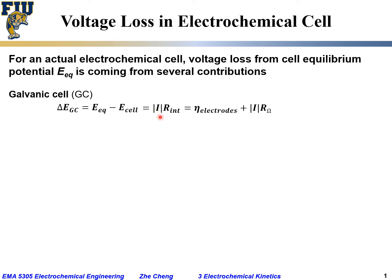If we break down the loss further, it comes from two terms in general. One is the absolute value of the current times R_ohm — the ohmic resistance, primarily from the electrolyte. This is the ohmic term. Then there are overpotential terms, eta, representing the total voltage loss for both electrodes — anode and cathode.